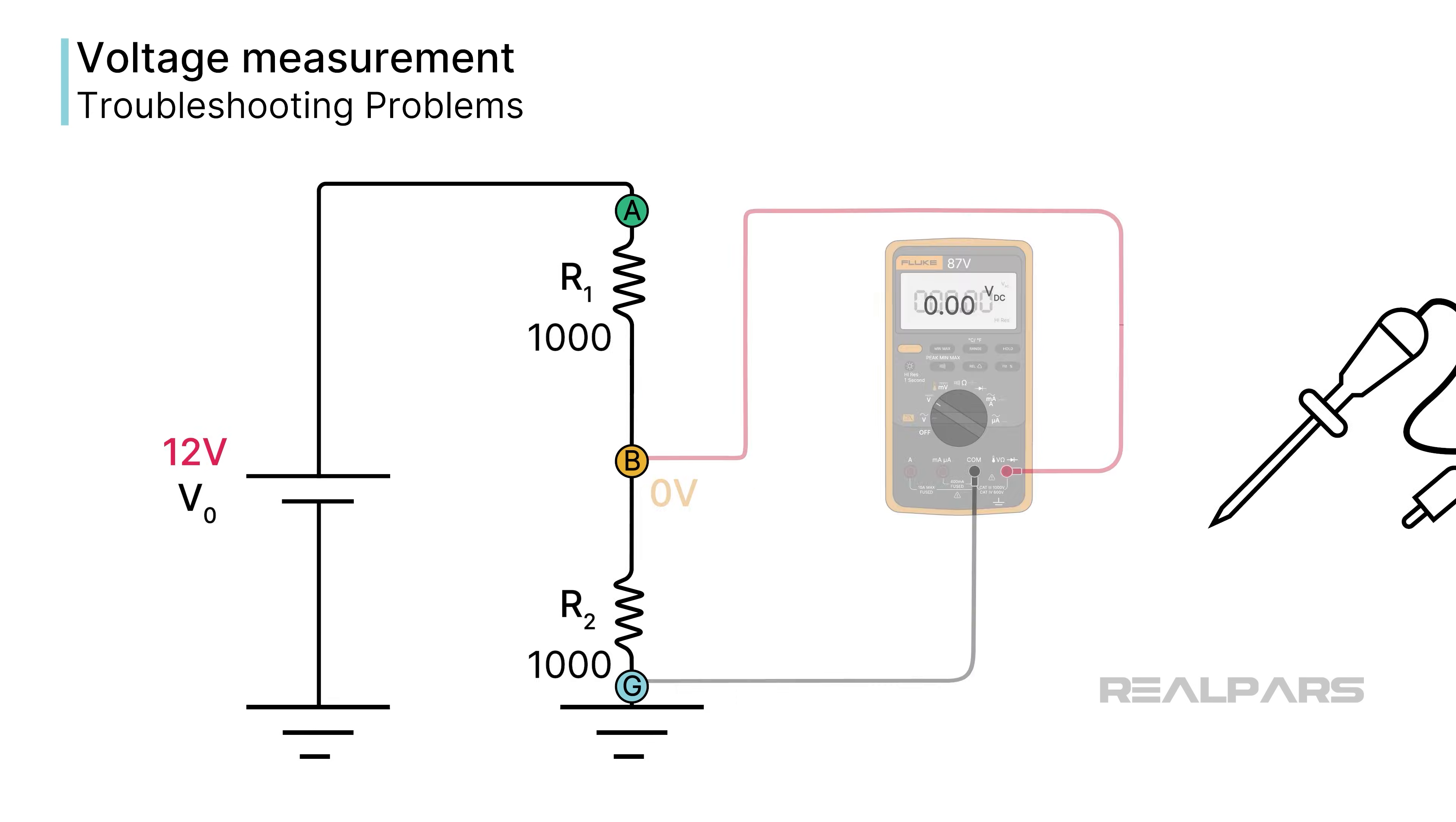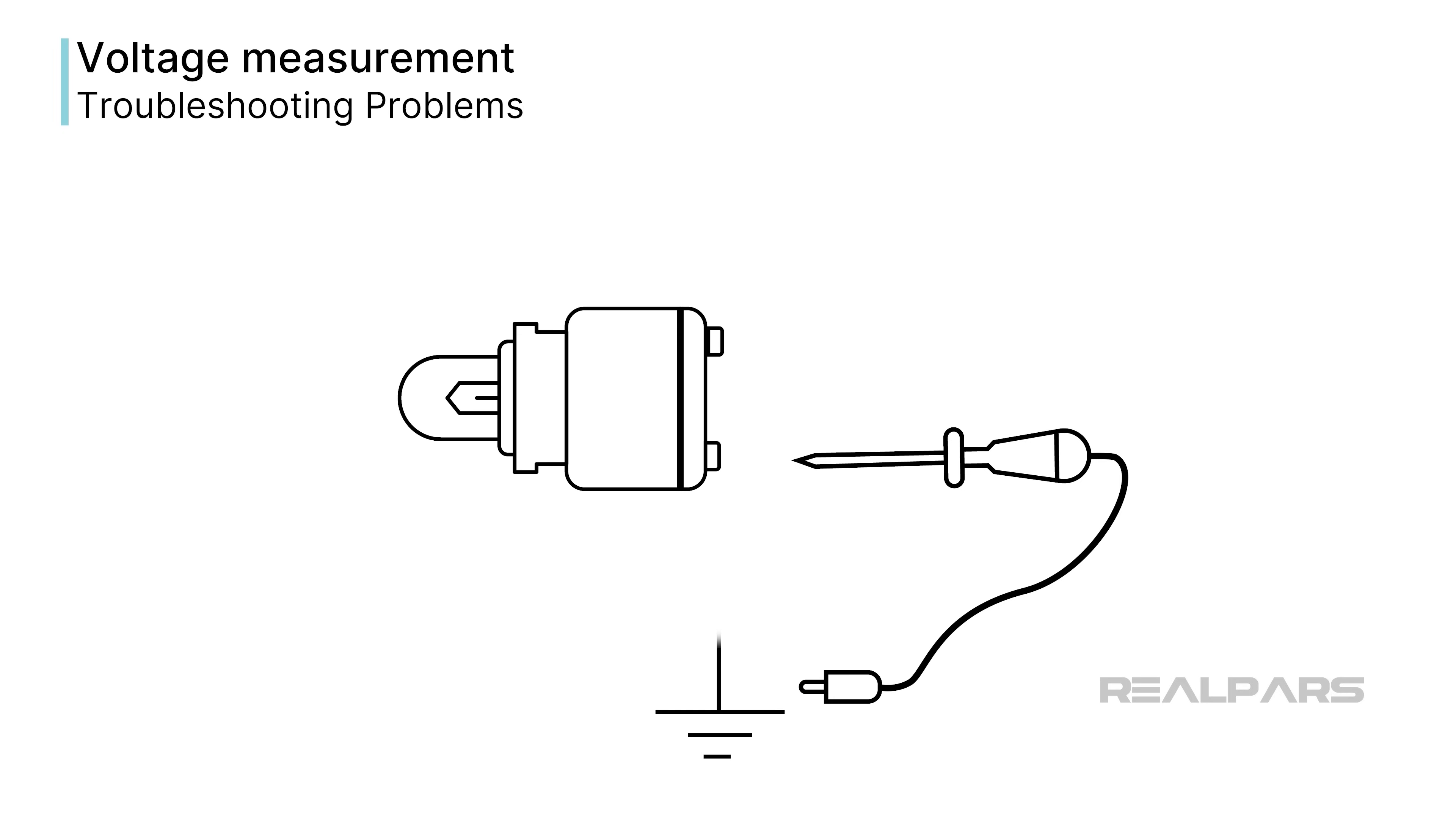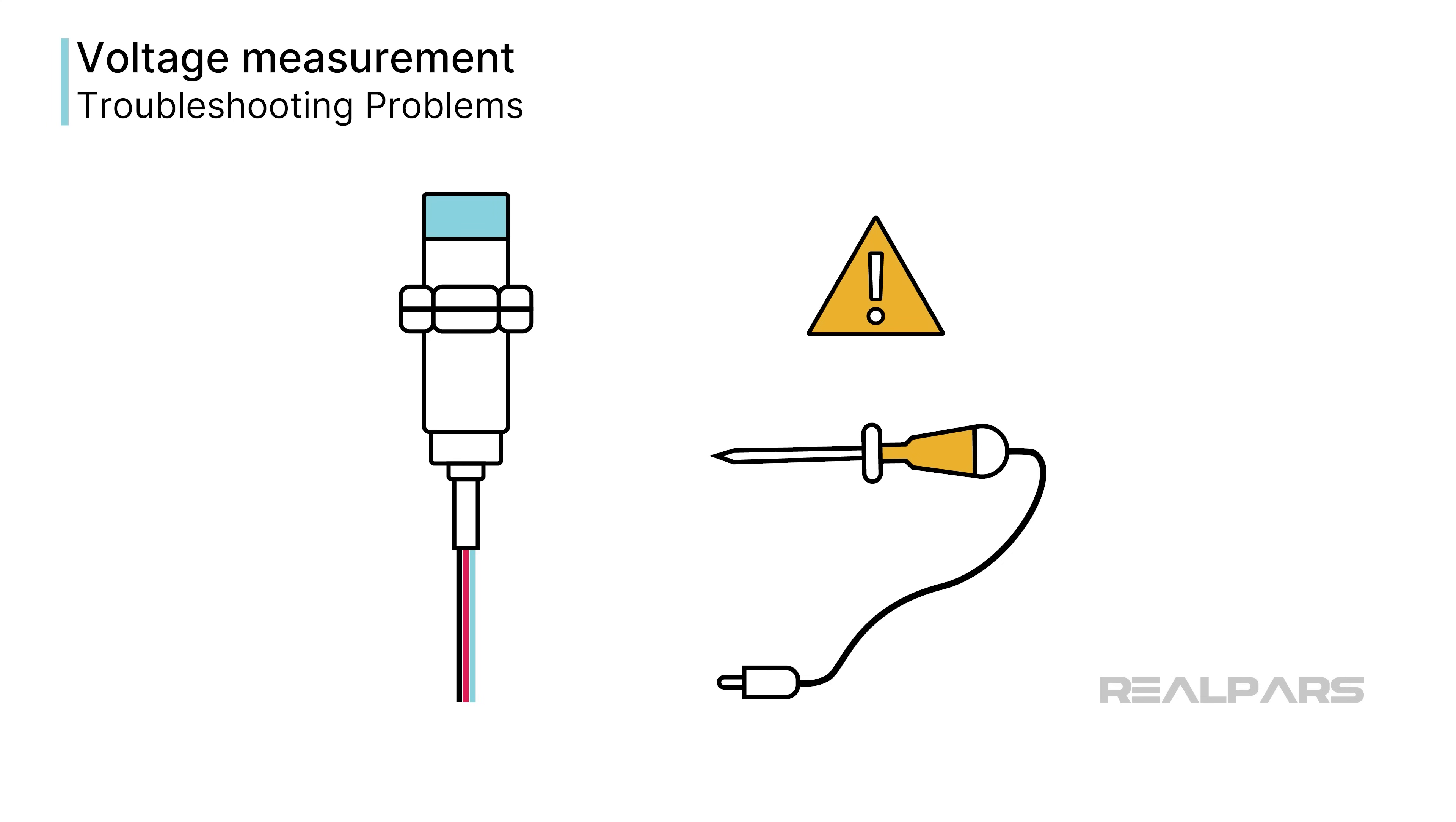Older technicians will say you can locate this problem with a test light. That's very true. Replace the DMM with a test light and repeat the process, observing the visual status of the test light. This process works well for troubleshooting automotive lights, but can cause more damage than the original fault in sensitive electronic devices, such as 3-wire proximity sensors. Many workplaces have banned test lights because of their low resistance characteristics.